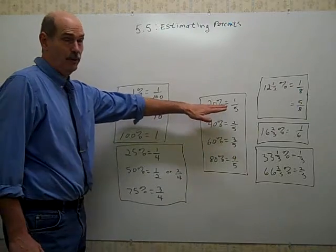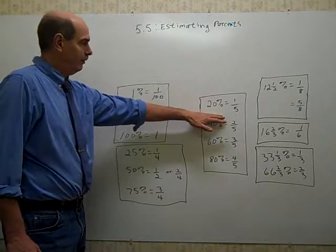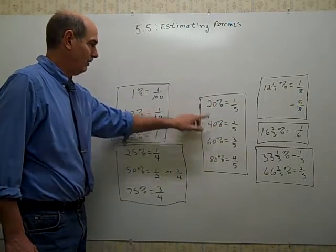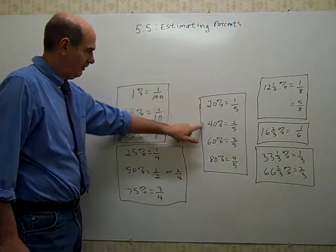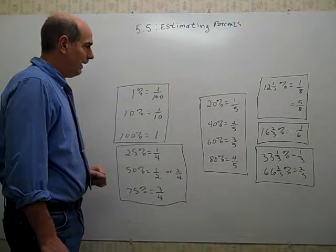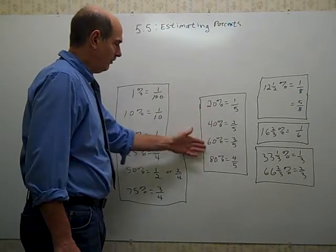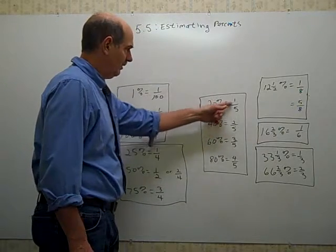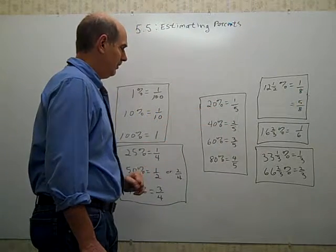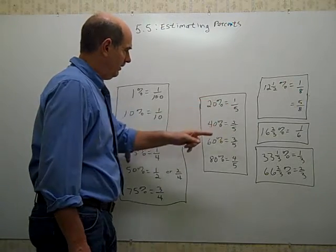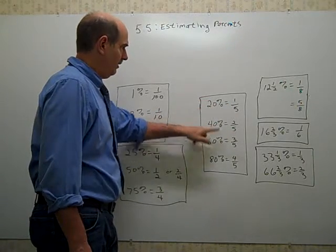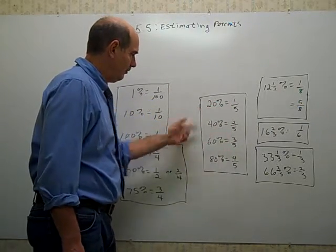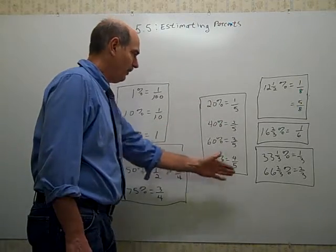If you can remember that you have to memorize this one: 20% is one-fifth. If you double 20%, you get 40%. If you double one-fifth, you have two-fifths. So if you get this basic one, you can generate the rest of the fractions that go with 20, 40, 60, 80, counting by 20s, counting by fifths. Every time you add a fifth, you add 20%. Every time you add 20%, you add one-fifth.